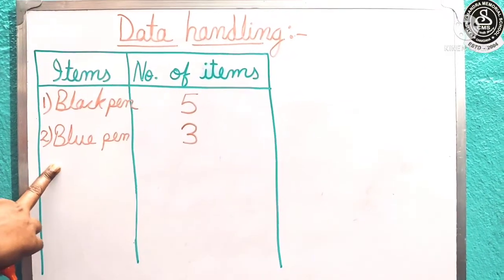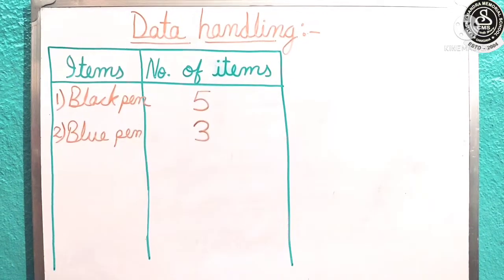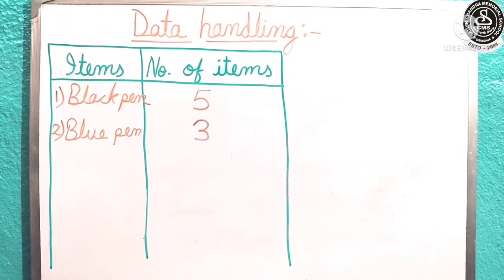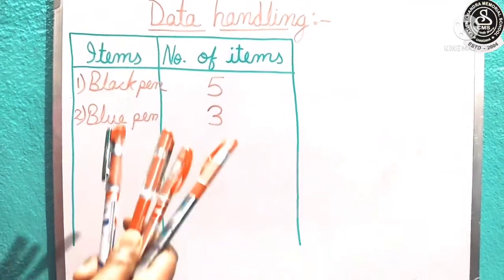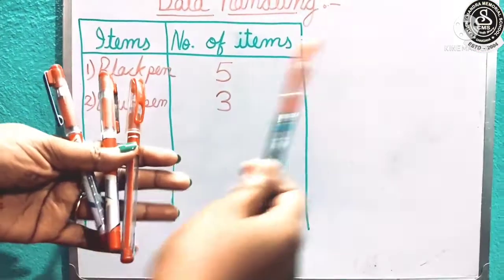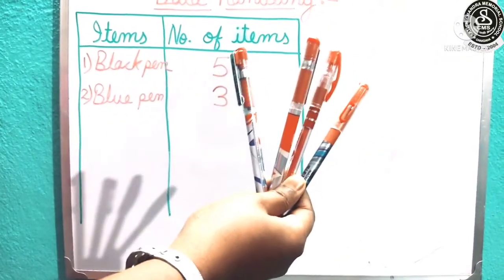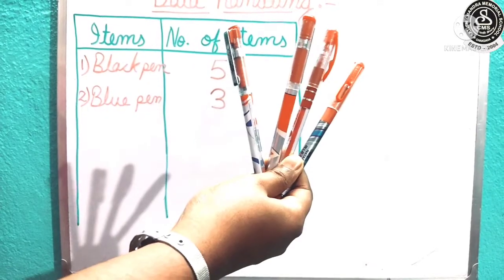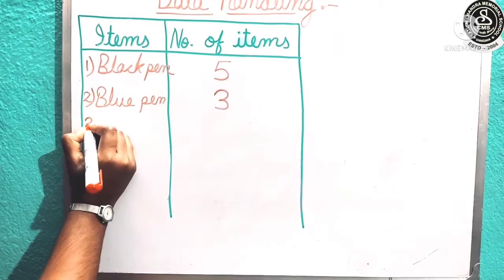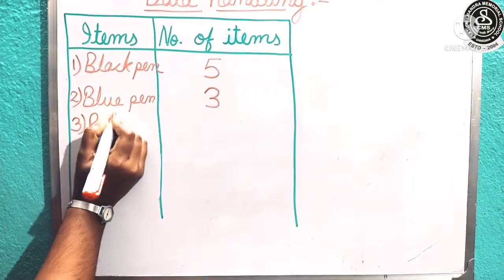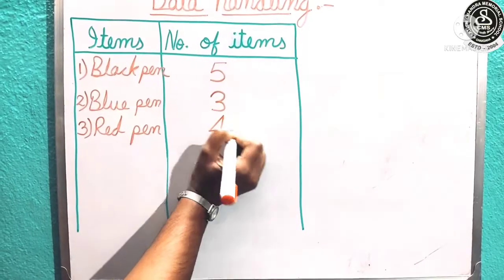Let us count how many red pens I have. 1, 2, 3, 4. Total 4 red pens. We are going to write here the third information we got. That is red pen, and how many we got? 4.